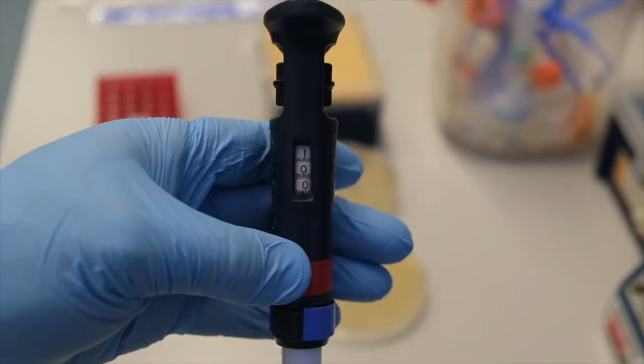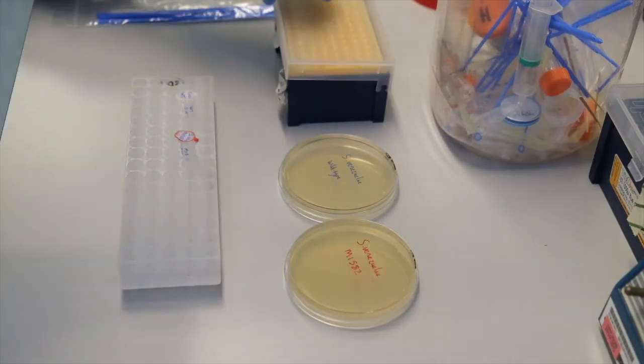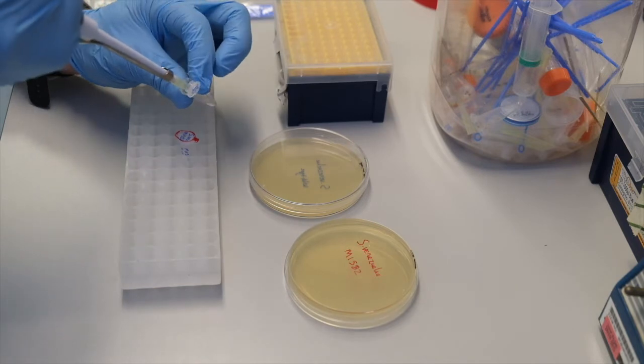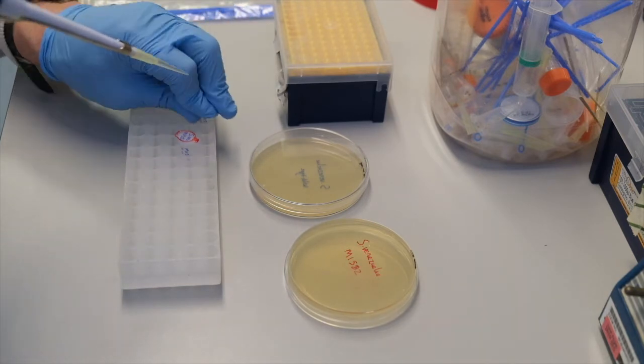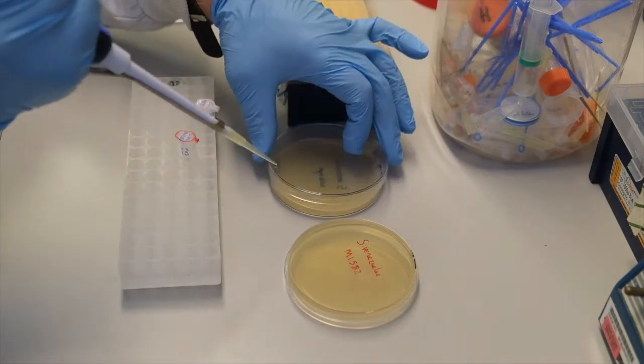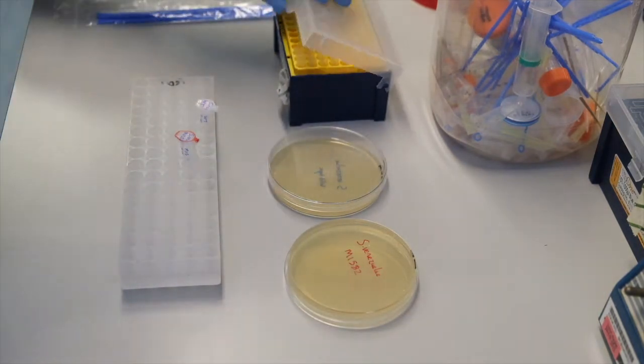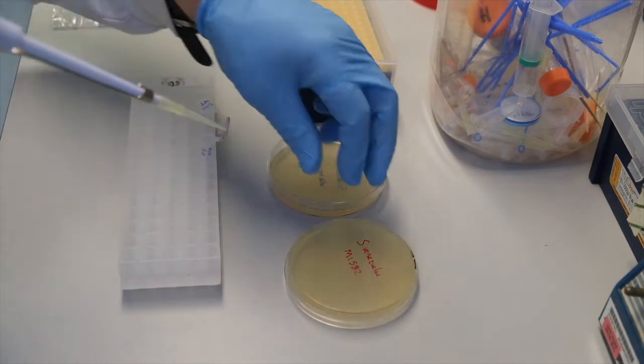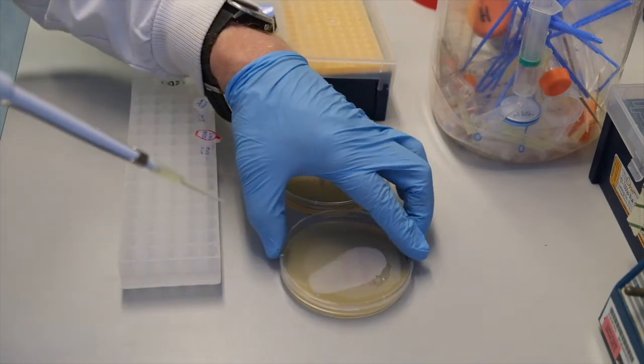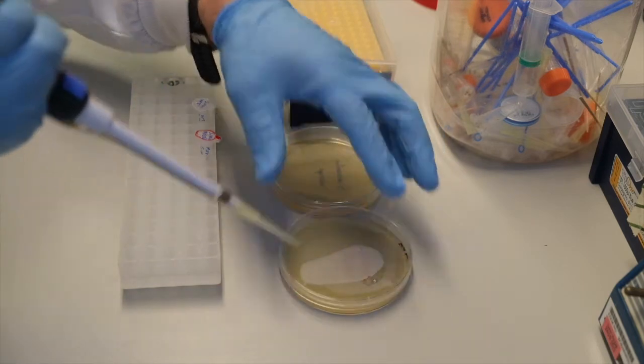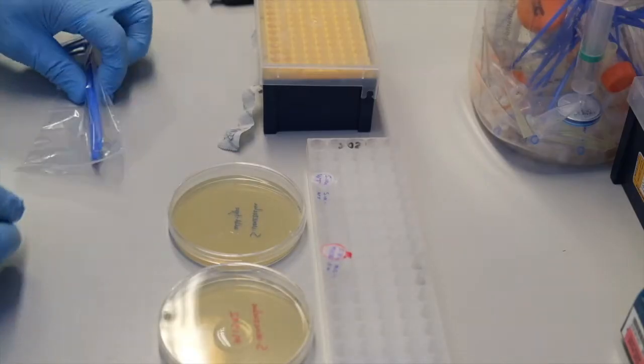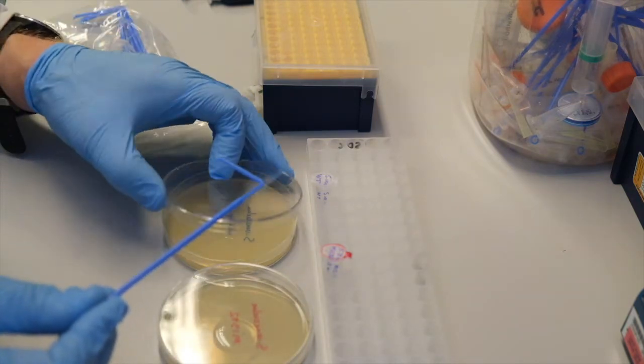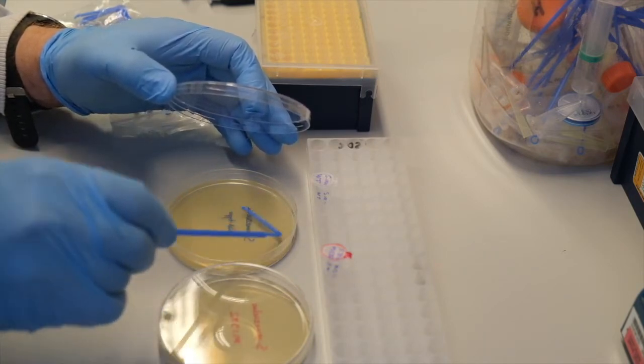We will pipette 100 microliters of spores onto each plate, wild type onto one plate and M1582 onto the other. We spread the spores evenly over the plates using a fresh spreader for each plate.